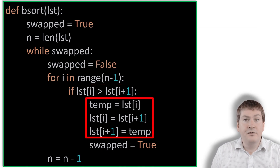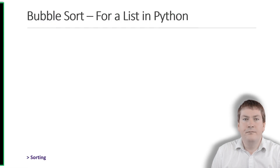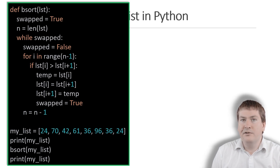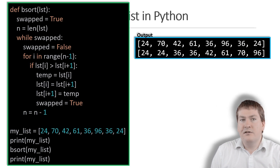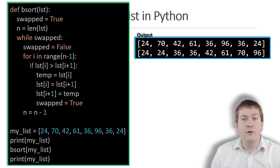The code here performs the swap. We copy the value of the current item into a temp variable to save its value, then swap the next item's value into the current item, and then the value in temp into the next item. Here we give our bsort function, which is our implementation of bubble sort, a list of out-of-order values, and then print the list before and after the function is called. After the function is called, the list is placed in the correct order. Note that as lists are mutable and passed by reference, changing the order of items in the function also changes the order outside of the function, so we don't actually have to return anything.